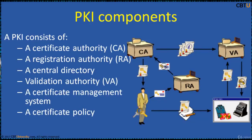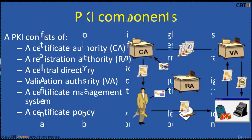PKI consists of: a Certificate Authority that stores, issues and signs the digital certificates; a Registration Authority (RA) which verifies the identity of entities requesting their digital certificates to be stored at the CA; a central directory, which is a secure location in which to store and index keys; a third party Validation Authority, which can provide entity information on behalf of the CA; a certificate management system managing access to stored certificates or the delivery of certificates to be issued; and a certificate policy stating the PKI's requirements concerning its procedures.